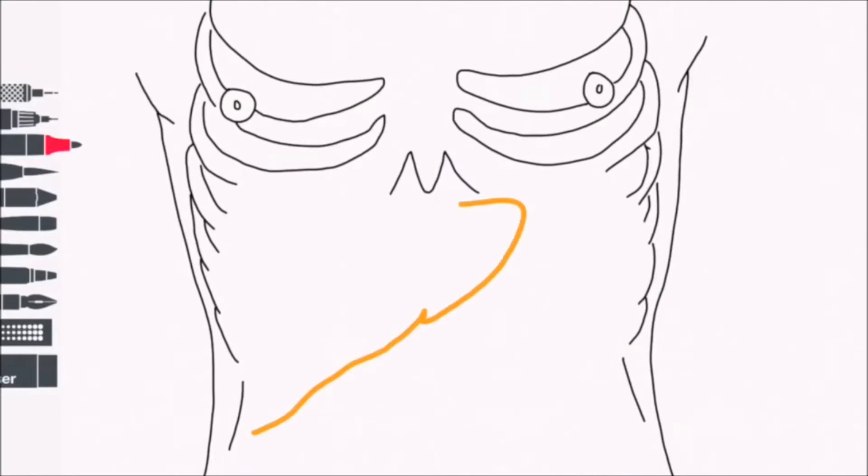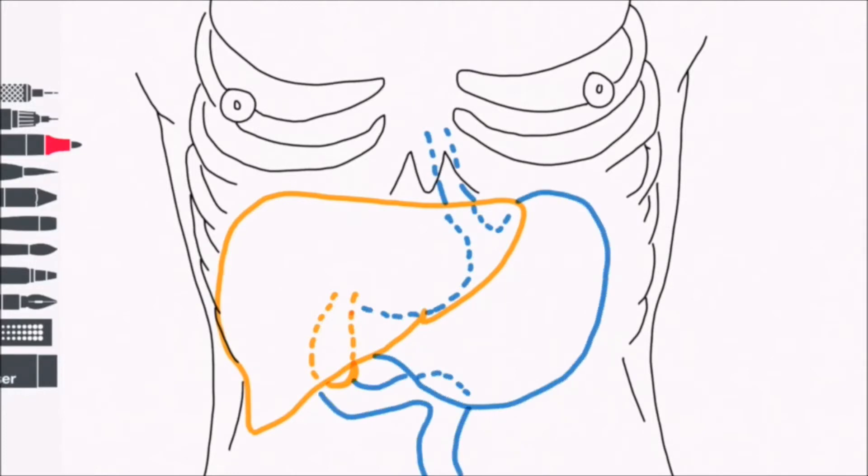When the abdomen is opened, we can see various foregut structures, most strikingly the liver, which I've just drawn, and the gallbladder poking out underneath. We can also see the stomach, but in order to see more, I'm going to have to remove the liver.